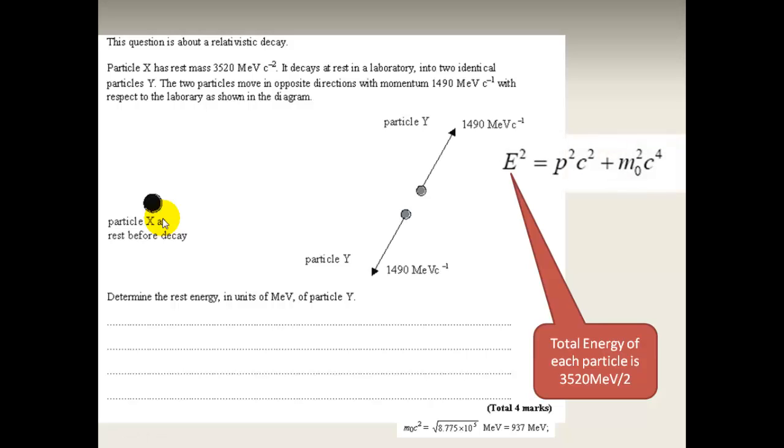And we have to use this equation again. We know E squared, you know the momentum because you're told what it is, and then you have to find the rest mass and you have to square root it. That's why we have the square root button at the end. Let's do it.